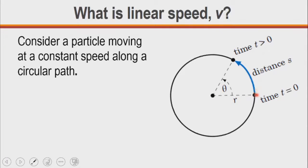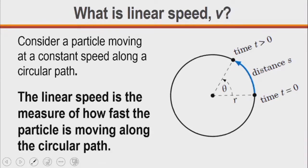At time t equals 0, the particle is here, and after some time later, the particle moves to this location, making this angle theta. We already know that the distance the angle is going to make is this arc length, which is r theta.